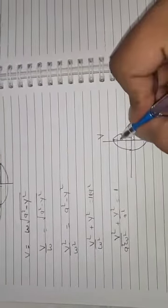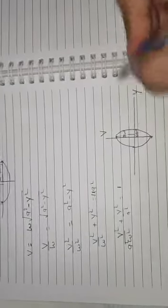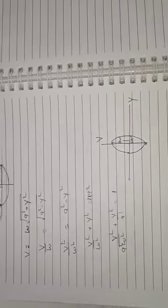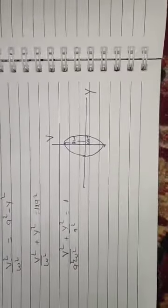Now we are going to see the graph between acceleration and displacement. Suppose acceleration is represented by A and displacement by y. The relation is: a = -ω²y.